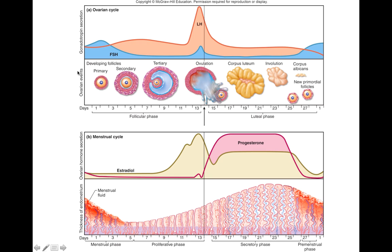You can see ovarian events. There are three main phases outlined here: the follicular phase, where you have growth of the follicles; then ovulation, which is a one-day event; and following ovulation, you have the luteal phase.